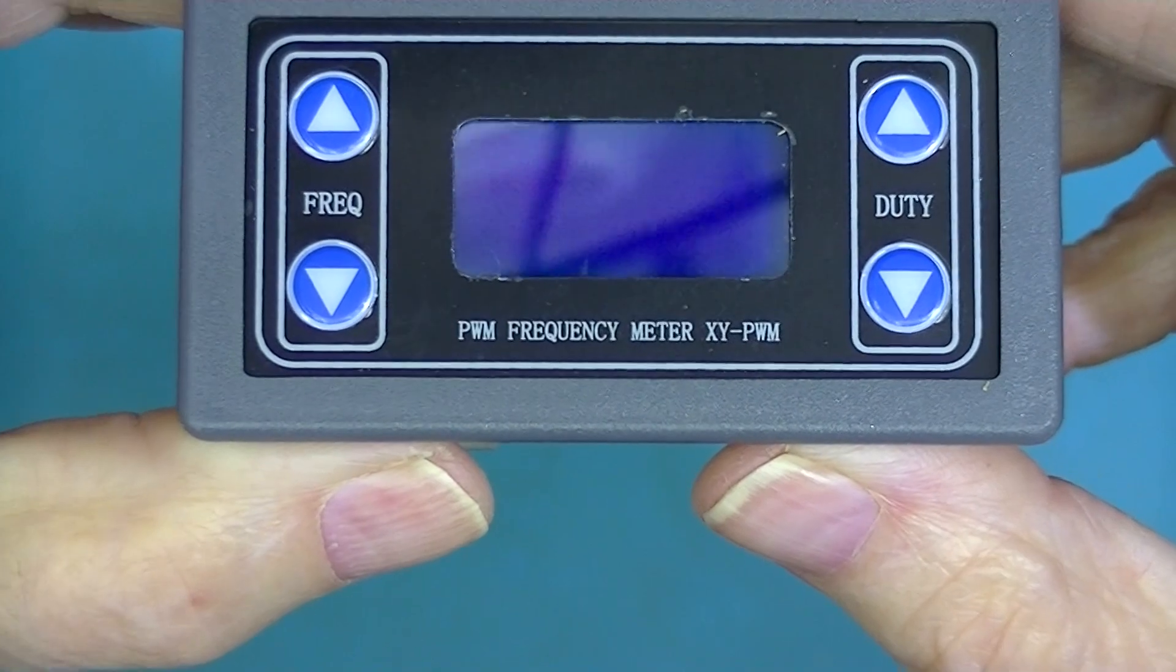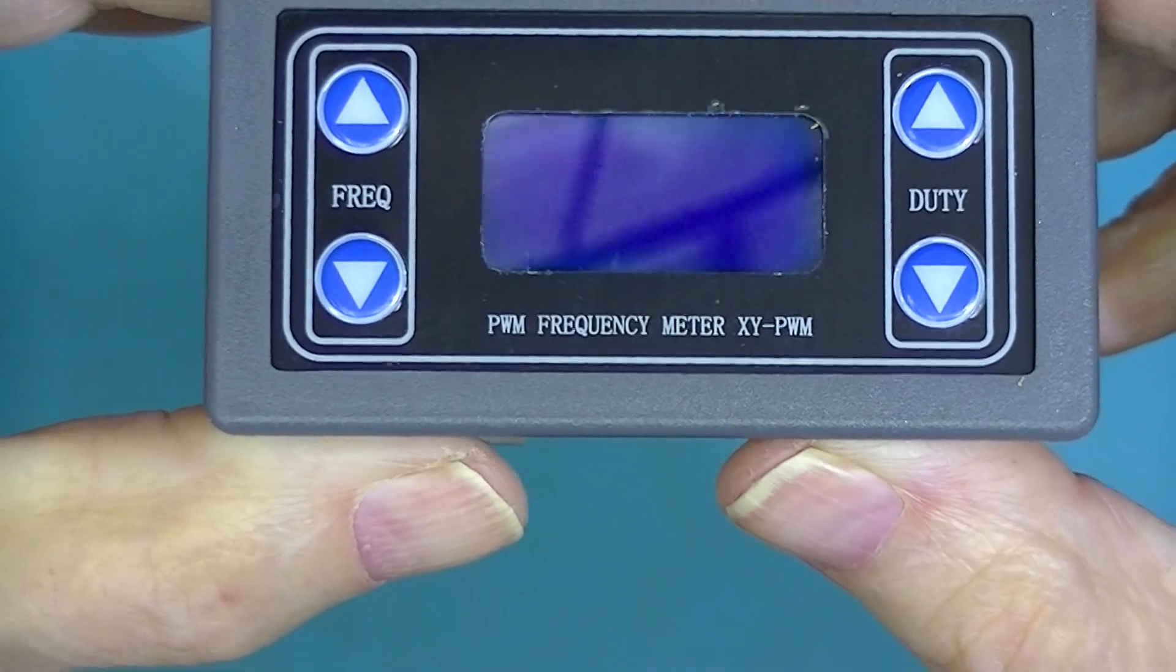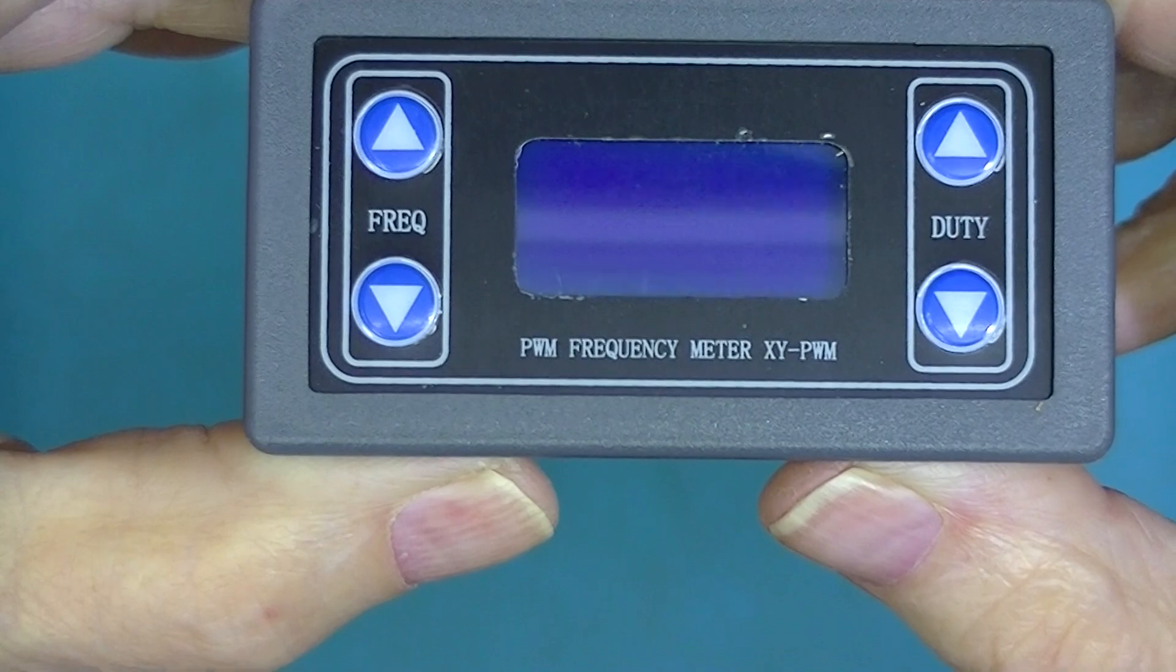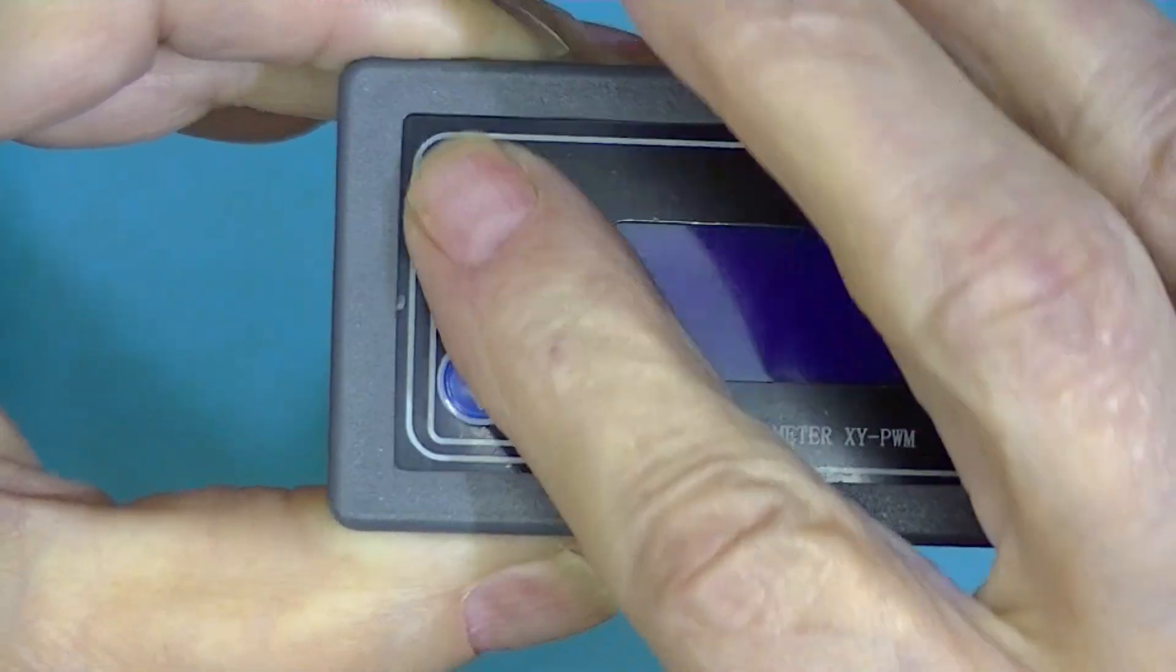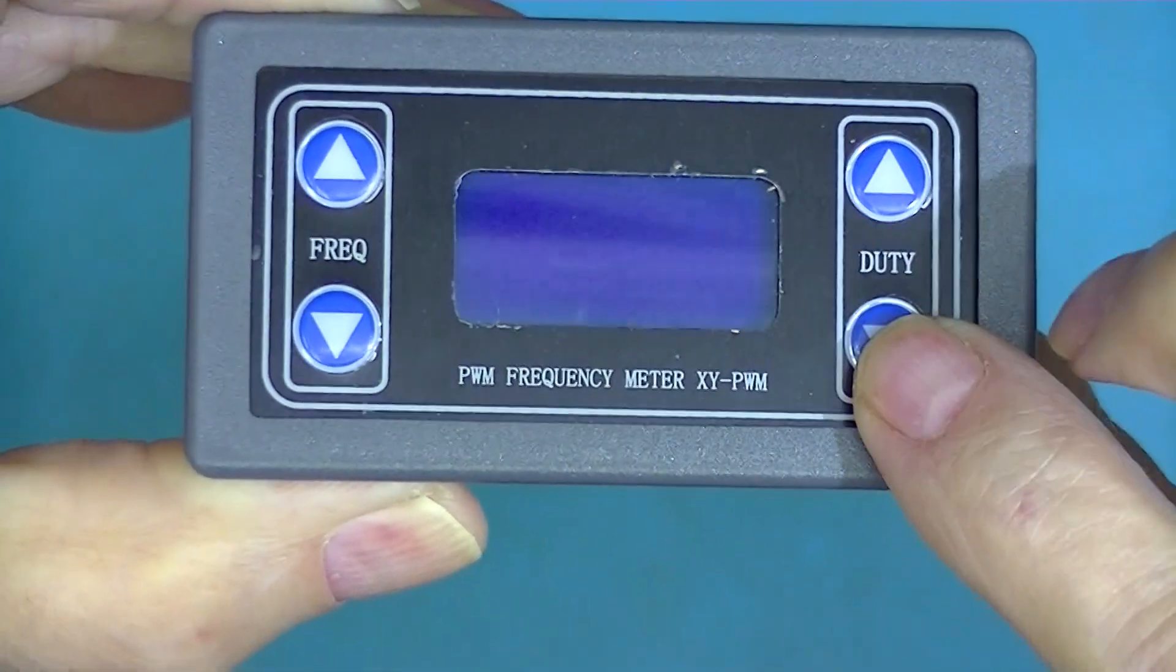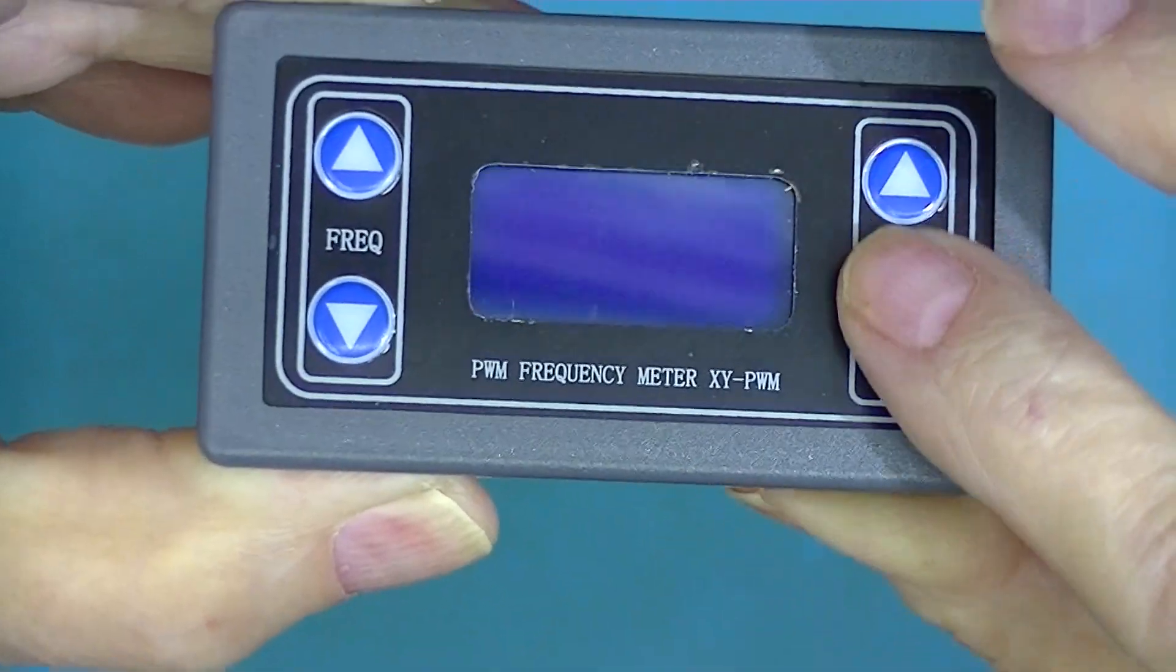Although this says frequency meter, it really is an adjustable pulse width signal generator. There's a frequency up and down, and this is duty cycle on 0 to 100%.